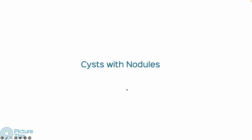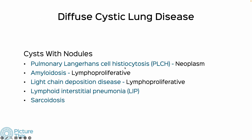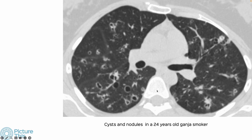Then we have entities where we see cysts with nodules. PLCH can present with cysts and nodules. The other two — amyloidosis and light chain deposition disease — are lymphoproliferative. LIP, when associated with nodules and ILD, is even easier to diagnose. This patient was a cannabis smoker with nodules and cysts. PLCH presents initially as nodular disease and is usually not picked up at that stage. Here you can see some nodules cavitating into cysts. The patient gave up smoking and was absolutely fine.